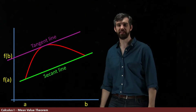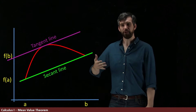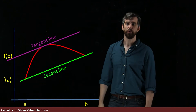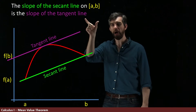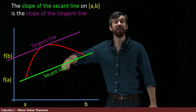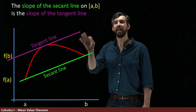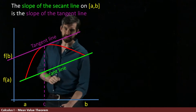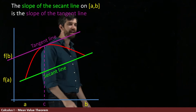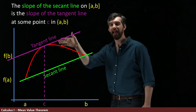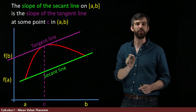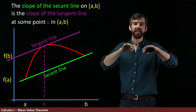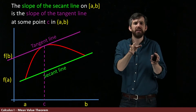So in effect, the claim of the Mean Value Theorem is that for nice functions — and we'll define what we mean by nice functions in a moment — there is always such a tangent line. There's somewhere on the curve where the tangent line and the secant line have the same slope. The slope of the secant line on interval [a, b] equals the slope of the tangent line at some value c inside the open interval (a, b) — not at the endpoints, but strictly inside.